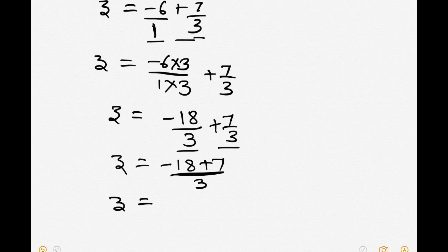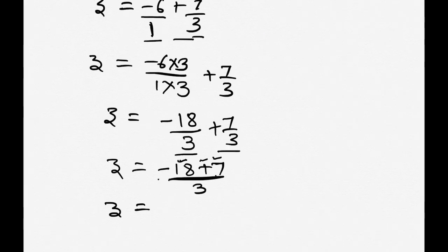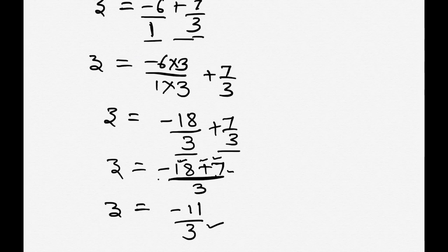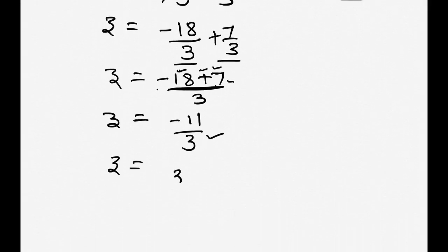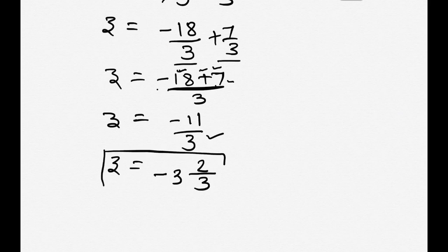Now that both denominators are the same, we combine the numerators: minus 18 plus 7 upon 3. When one number has a minus sign and the other has a plus sign, we do subtraction. Here 18 has the minus sign and 7 has the plus sign, so 18 minus 7 is 11, and the sign of the greater number gives minus 11 upon 3. Converting to a mixed fraction: 3 threes are 9, remainder 2, so z is equal to minus 3 and 2 by 3.